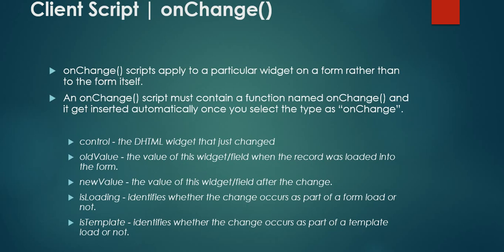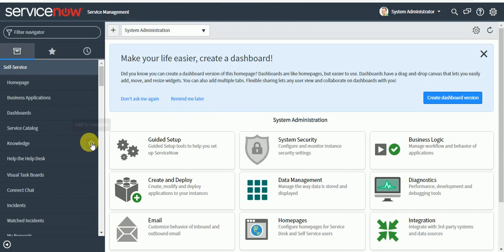An OnChange client script must contain a function named onChange, and this function automatically gets inserted when you select OnChange in the type field on the client script form. Here you get some predefined parameters or variables which you can make use of. I will explain what each of them refers to.